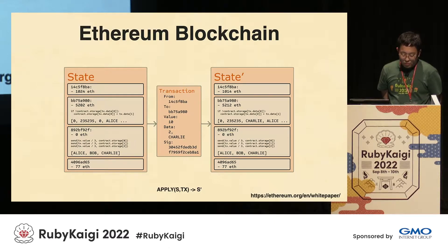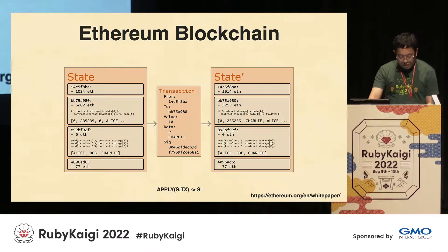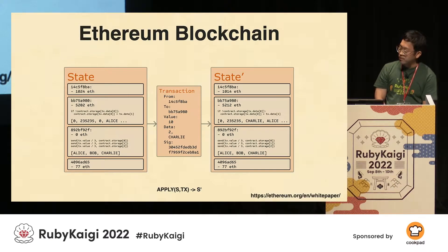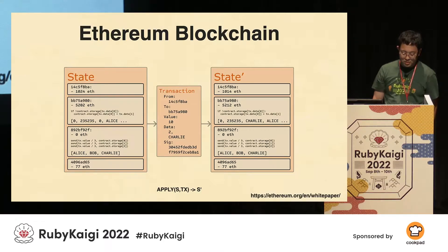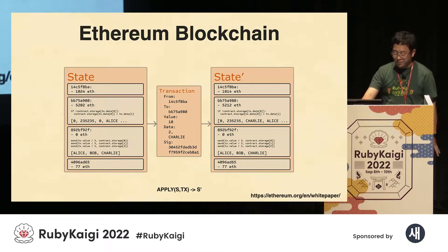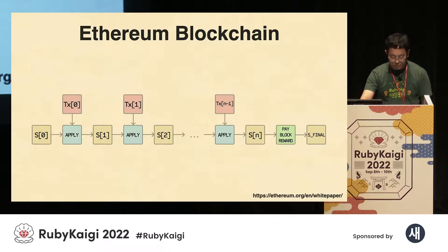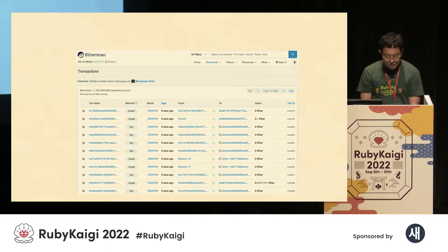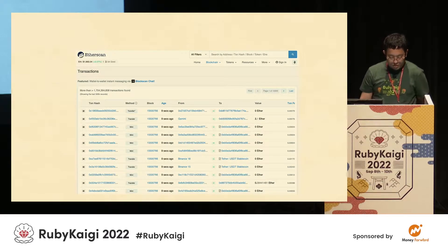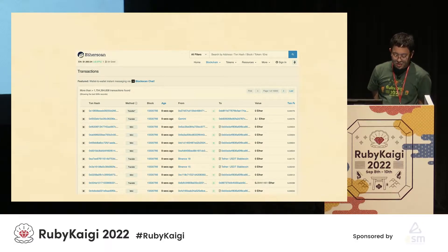The Ethereum white paper contains this diagram. A transaction is executed to update the state. In this example, 10 ETH is sent from the 'from' address to the 'to' address. The transaction is captured and more and more blocks are chained together. This is a service called Etherscan. You can see all the history on the Ethereum blockchain on the web. You can see that many transactions are executed and captured in a single block.